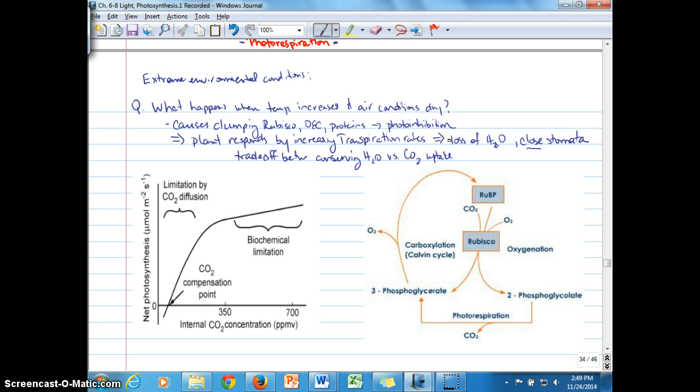If the stomata are closing, then there's less carbon dioxide entering the leaf and moving into the Calvin cycle. So the graph that we see over here shows us internal CO2 concentration versus net photosynthesis rate.